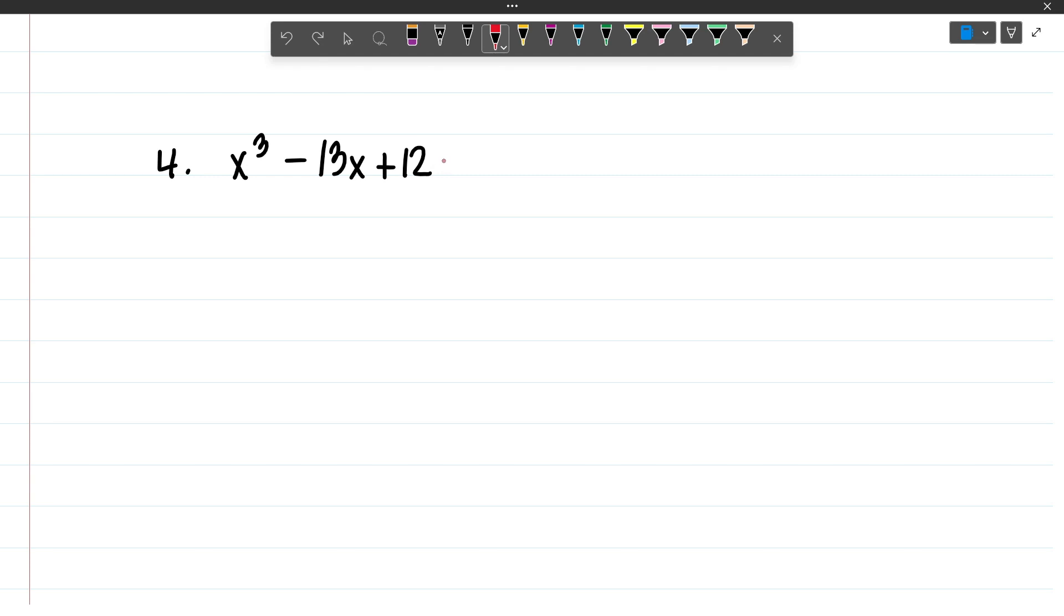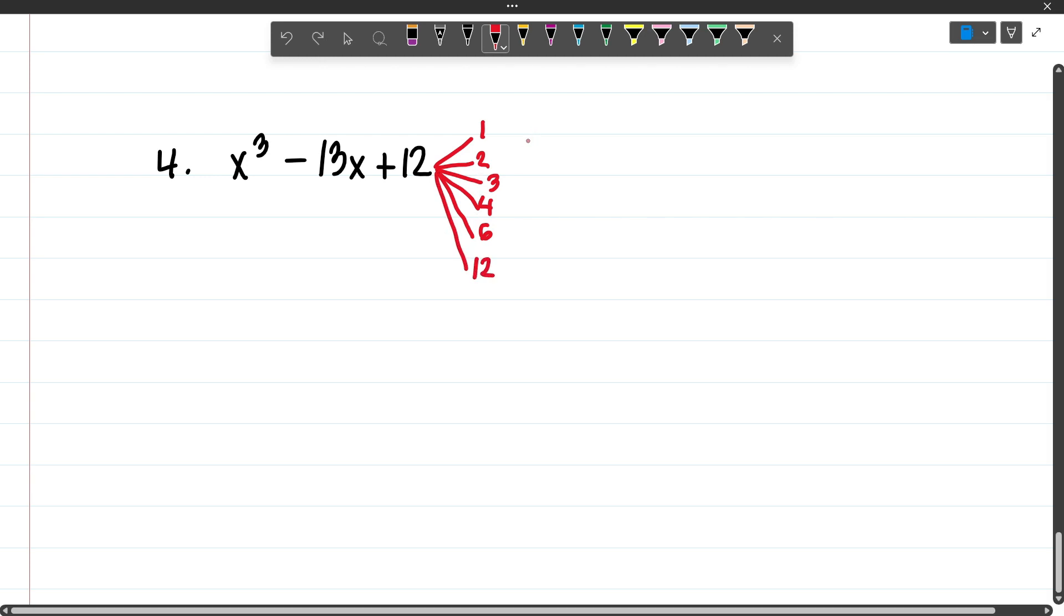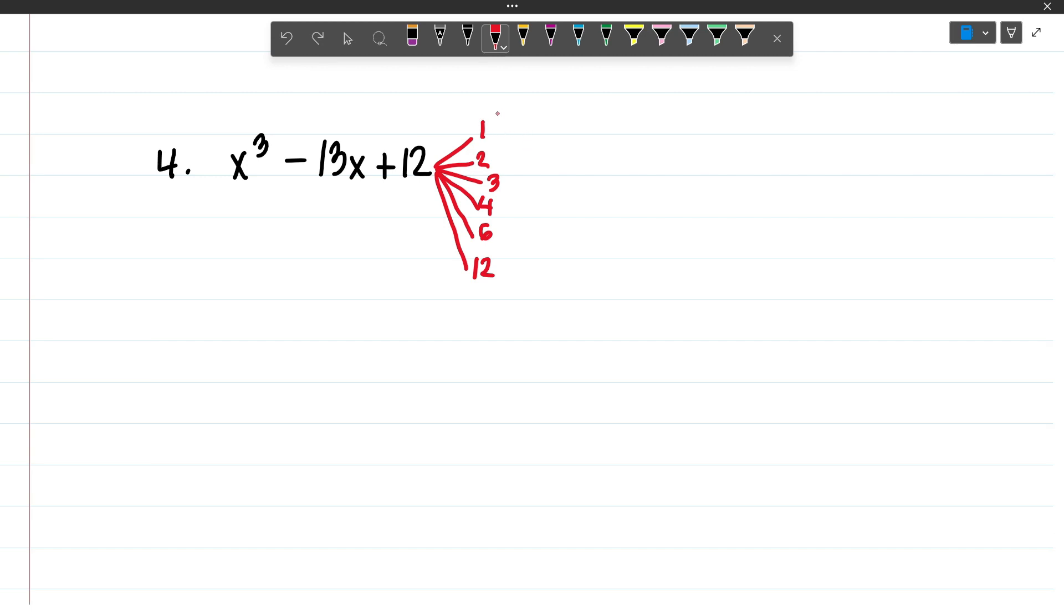So the factors of 12 are 1, 2, 3, 4, 6, and 12. And you will also need to copy the negative values of your factors.